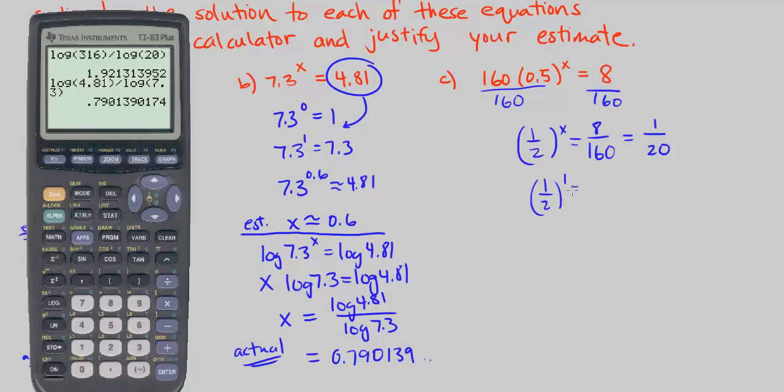1 half to the power of 1 is 1 half. 1 half to the power of 2. We're just squaring the numerator and denominator. 1 half to the power of 3. We're cubing the 1 and the 2. 1 half to the power of 4. As you can see, we're just multiplying the previous number by 2 also. 1 over 16. 1 half to the power of 5. 1 over 32. And we know 1 over 20 is in between these two numbers.